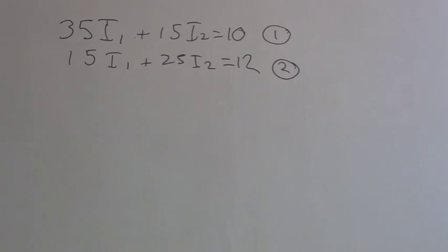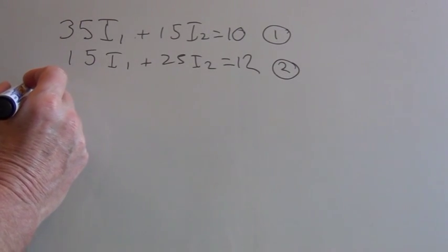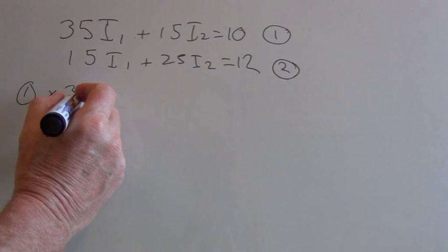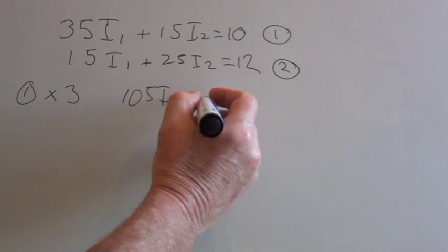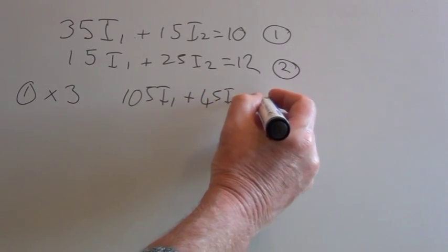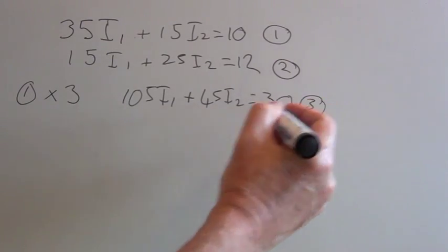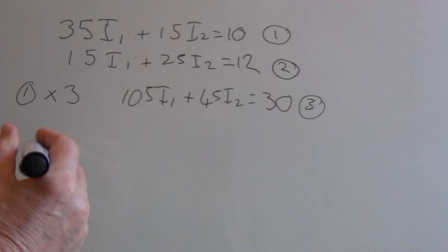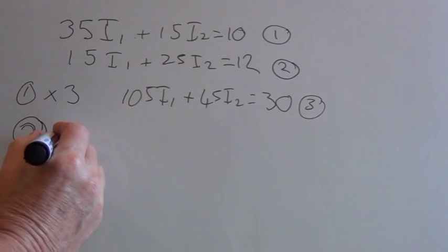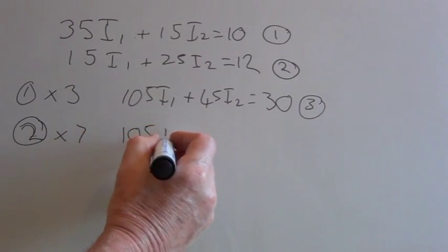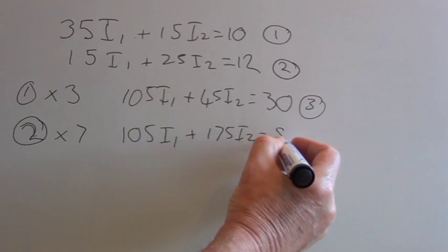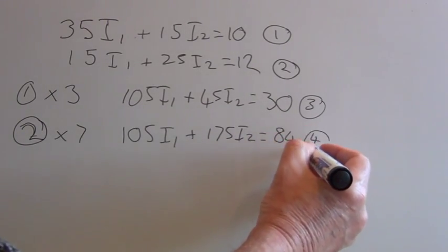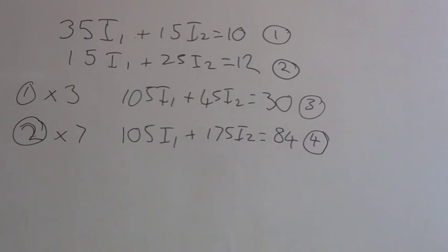Right, welcome back. So here's what I do: multiply equation 1 by 3 to give 105 I1 plus 45 I2, which equals 30, and we'll label that as number 3. Now we need to multiply equation 2 by 7, and this will give us 105 I1 plus 175 I2 equals 84, and we'll label that number 4. Now, as you can see, we have two of these values the same, so we can actually eliminate them in the next part of the process.